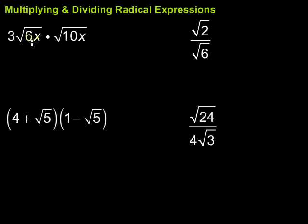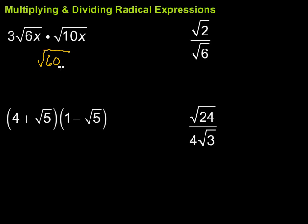So let's take a look at this first one. What is the only operation going on between all that stuff? Multiplication. It's 3 times the square root of 6x times the square root of 10x. I can multiply those radicands — the 6x and the 10x — to give me the square root of 6 times 10, which is 60, and then x times x is x squared.